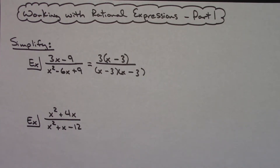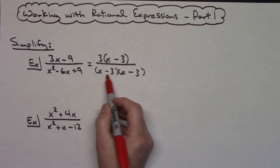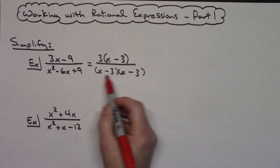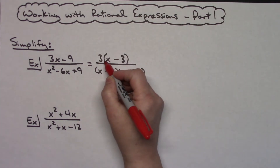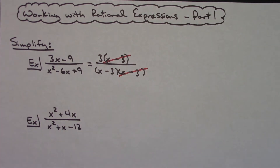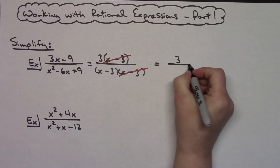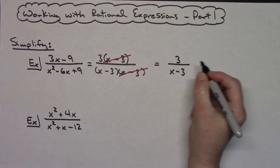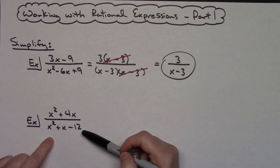Now I'm going to look for something that crosses out between the numerator and the denominator. I have the binomial (x − 3) on top and two binomials (x − 3)(x − 3) on the bottom. I can cross out one (x − 3) from the top with one from the bottom, and that leaves my simplified rational expression as 3 over (x − 3).